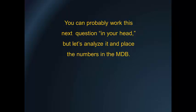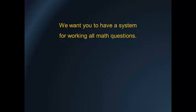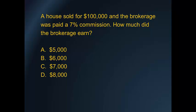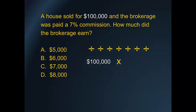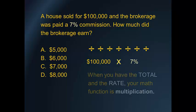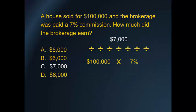You can probably work this next question in your head, but let's analyze it and place the numbers in the MDB. We want you to have a system for working all math questions. Example: A house sold for $100,000 and the brokerage was paid a 7% commission. How much did the brokerage earn? The $100,000 is the big number, so it is the total and goes in the lower left. The 7% is the rate, so it goes in the lower right. Rule 1: total times rate equals part. $100,000 times 7% equals $7,000.